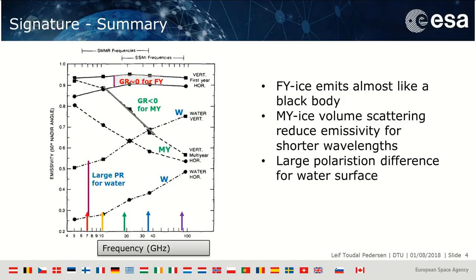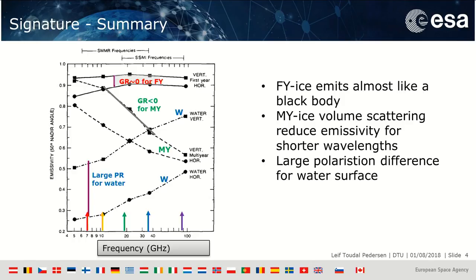For sea ice, first-year ice that contains salt behaves like a black body in the microwave range — it has a very high emissivity and hence the brightness temperature is very close to the physical temperature. When the ice survives a summer season, this salt drains out due to melt processes, and we are left with voids of air inside the ice pack. These air bubbles scatter the microwave radiation at the shorter wavelengths, leading to a decrease in the emissivity or brightness temperature of multi-year ice.